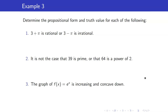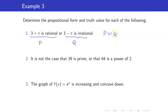Let us determine the propositional form and truth value for each of the following. I want you to write it in symbolic form. Here I will let this be P and this be Q, so the propositional form is P or Q. Let us determine the truth value. '3 plus pi is rational' — that is false, since pi is irrational, adding 3 still gives an irrational. '3 minus pi is irrational' — pi is irrational, so 3 minus pi is still irrational, so that is true. One of them is true, therefore the whole thing is true.